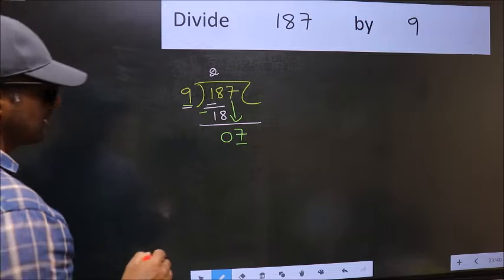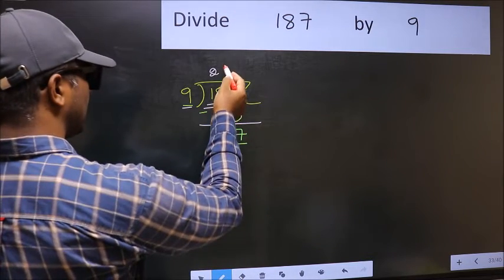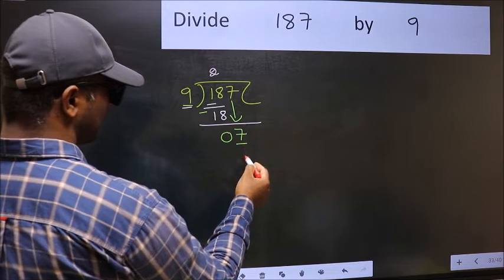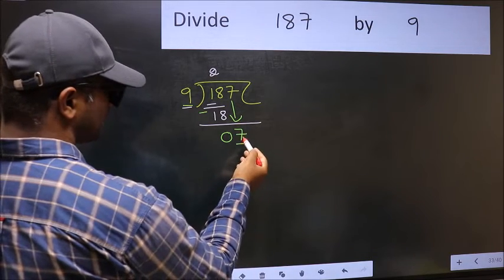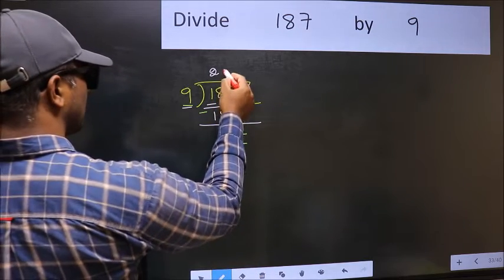what you should think of doing is which number should we write here. If I take 1, we will get 9. But 9 is larger than 7. So, what we should do is we should take 0.